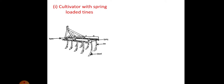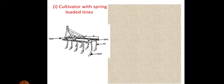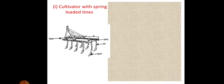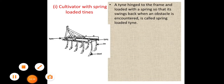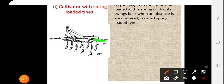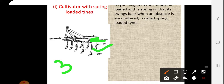This diagram shows a cultivator with spring-loaded tines. You can see the spring attachment here. The tines are always in odd numbers: three tines, five tines, seven tines, nine tines, eleven tines, and nowadays there are also thirteen tine cultivators.